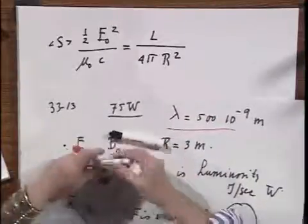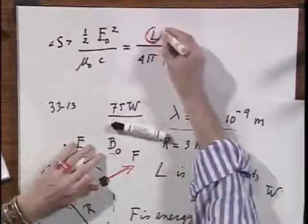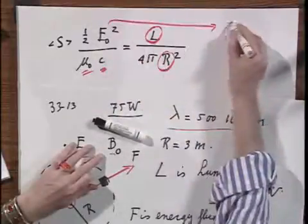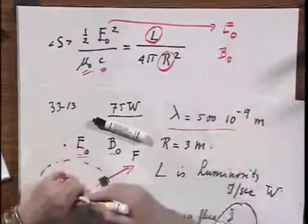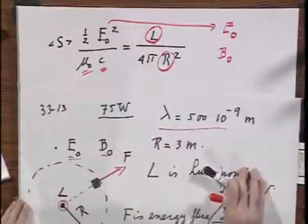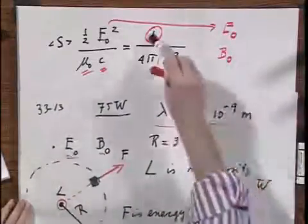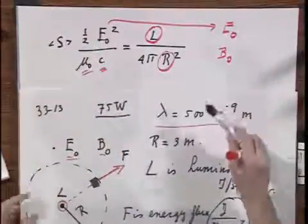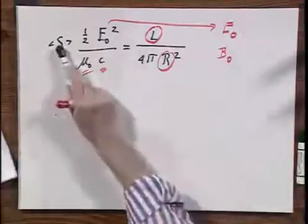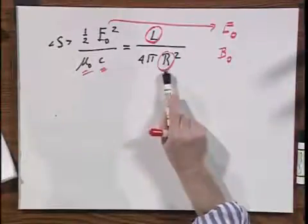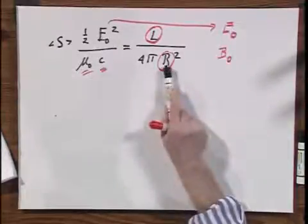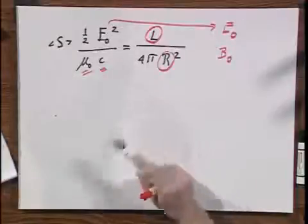And that now equals L divided by 4πR². And you see, you know everything that there has to be known. You know L, you know R, μ₀, and c, so out pops E₀. And if you have E₀, out pops B₀. And so the E₀ and the B₀ only depend on L and R, they only depend on the Poynting vector and they are independent of the wavelength. And since the Poynting vector falls off as one over R², you see that E₀ falls off as one over R and B₀ also falls off as one over R.